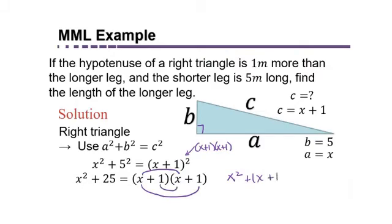Inner times inner, one x. And last times last, one times one is one. So then combining these two like terms here, you can only combine terms that have the same variable with the same power, so there's no like term for the x squared. But one x plus one x is two x, and then the one stays the same.